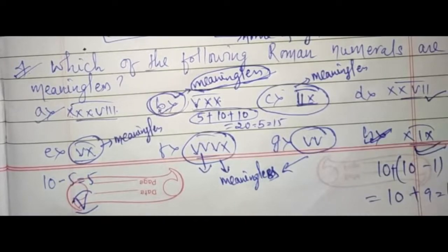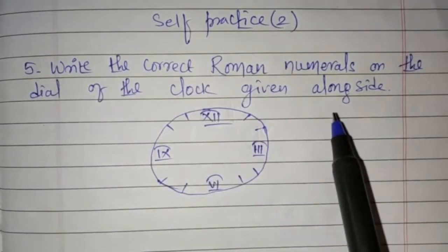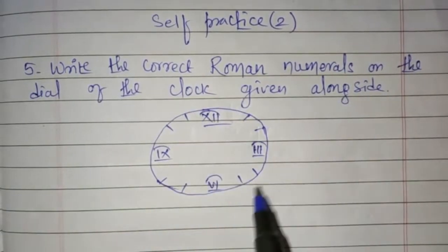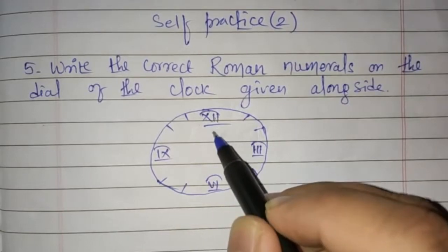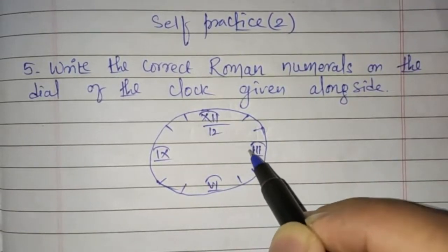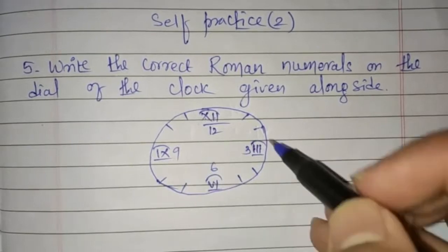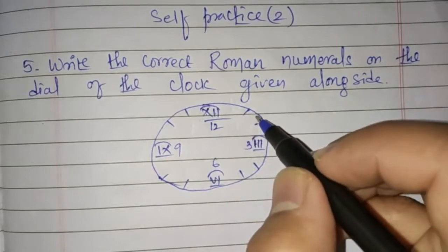So let us proceed further to the class assignment. Students, here we have the first class assignment — the continuation from where we stopped in the previous class, from self-practice 2, question number 5. You have to write the correct Roman numerals on the dial of the clock given alongside. You all know that XII represents 12, III represents 3, VI represents 6, and IX represents 9. You have to follow the regular clock which we use in our home.